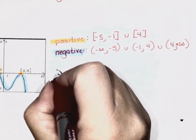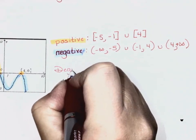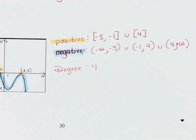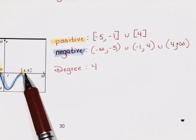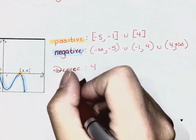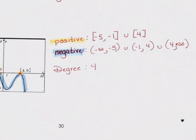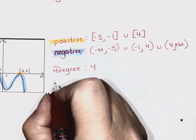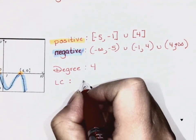What's the degree? Degree of four. And what else do we know? Both end behaviors are in the same direction, so it's an even function. Both ends go in the same direction. Leading coefficient — negative.